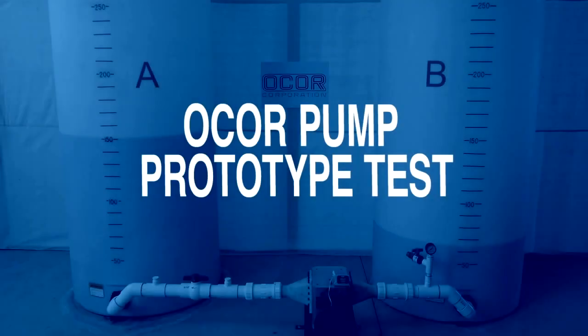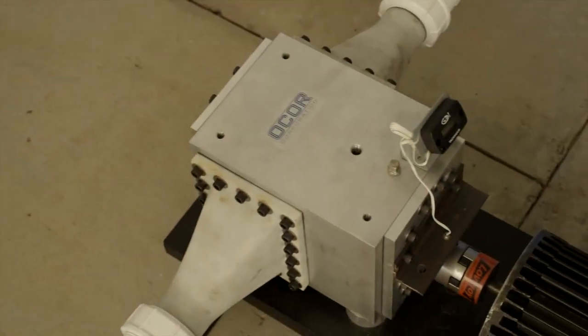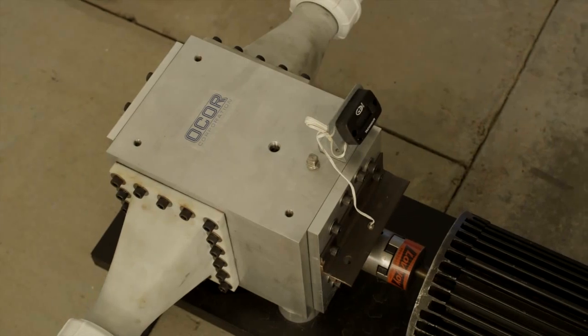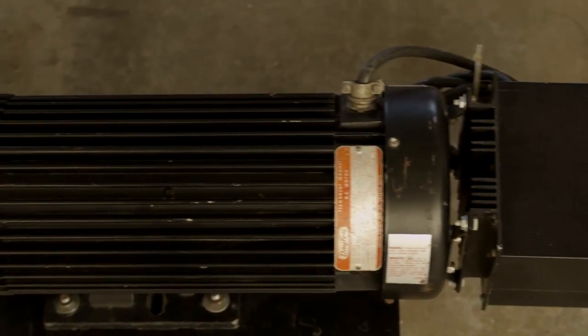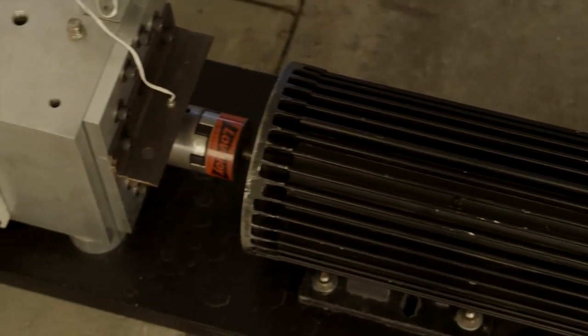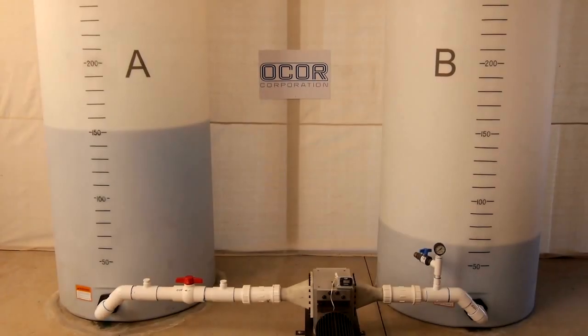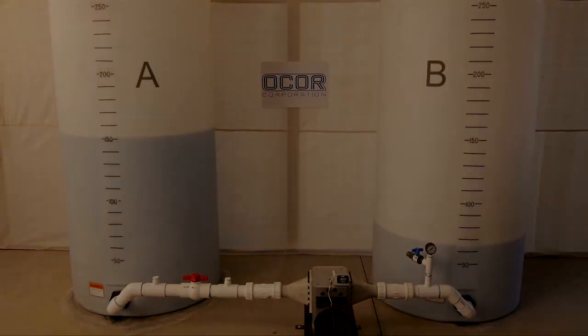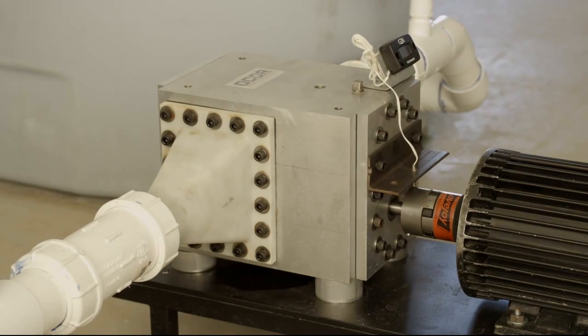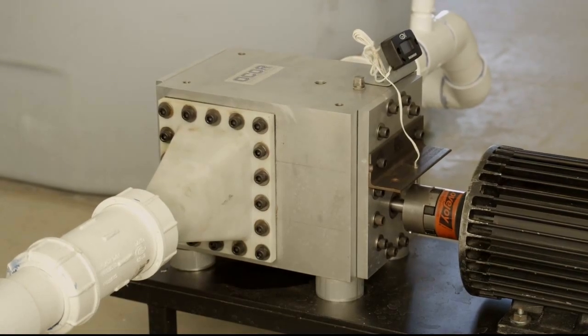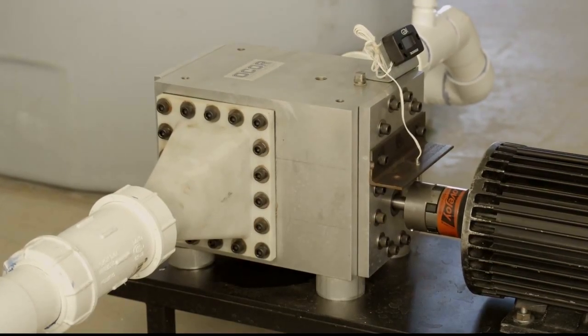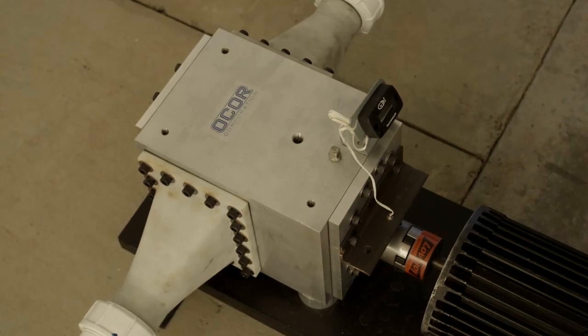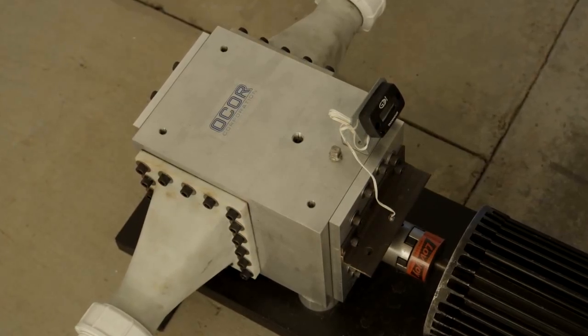We will demonstrate the operating characteristics of the OCOR multiple segment lobe pump using a simple test environment. The four rotor pump unit is attached to a reversible 1.5 horsepower motor and mounted on a bed plate that is roughly centered between two 300-gallon water tanks. Identical inlet and discharge housings provide a uniform flow transition from rectangular to round on either side of the pump that lead to 2-inch piping between the water tanks.